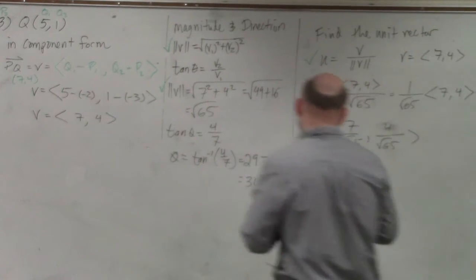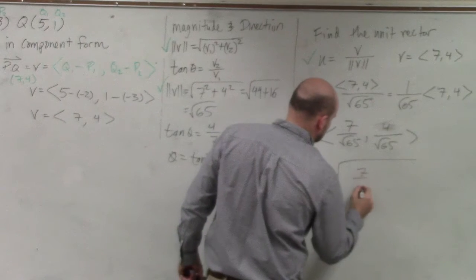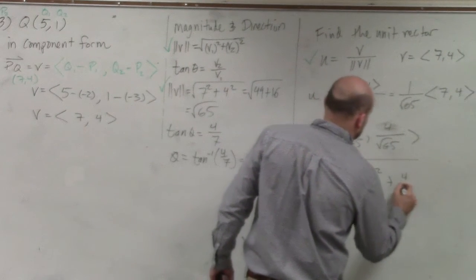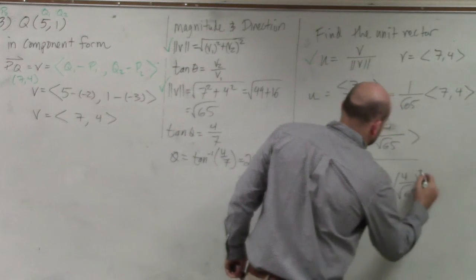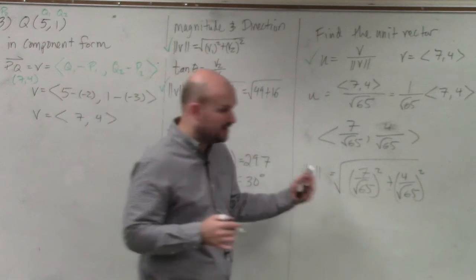So why don't we find the magnitude of this. It's actually not that bad. So 7 squared is 49. Square root of 65 squared is 65.